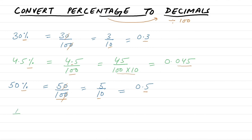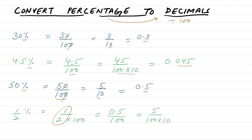Finally, let's do one-half percent (½%). This is written as (1/2) divided by 100, or 0.5 divided by 100. We rewrite 0.5 as 5/10, giving 5 divided by 1000 — three zeros at the bottom — which equals 0.005. This is how we convert percentages to decimals.